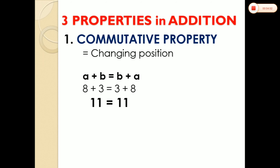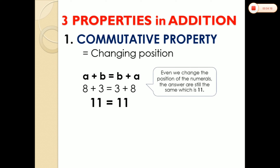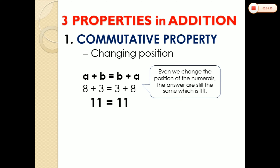So, it will be like this: A plus B is equal to B plus A. This property means that even if you change their position, the answer will be the same. Even if we change the position of the numerals or numbers, the answer is still the same, which is 11.